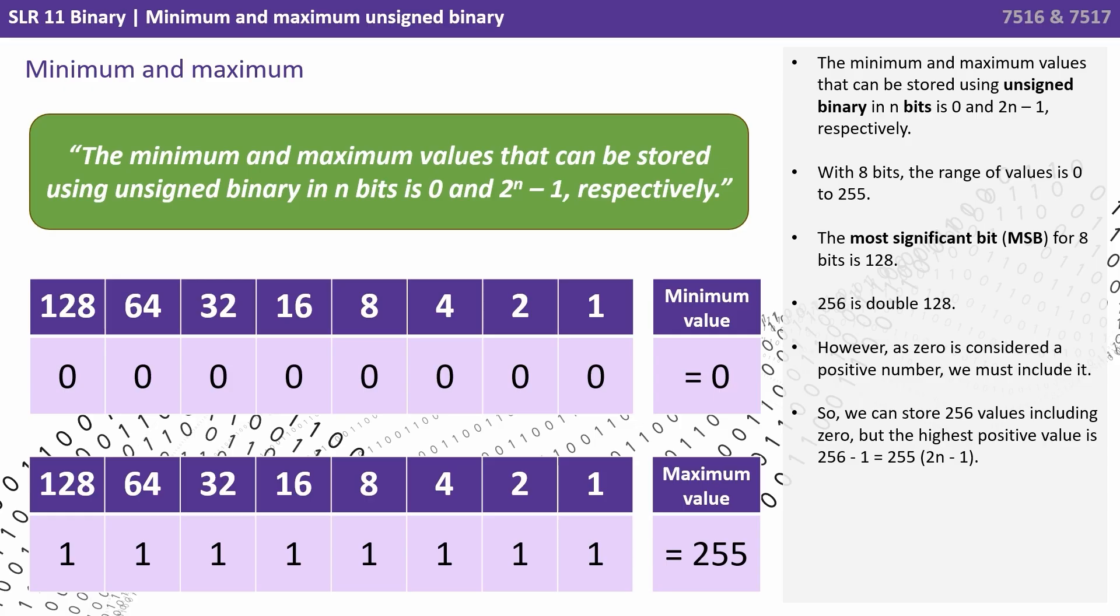256 is double 128. However, as 0 is considered a positive number, we must include it. So we can store 256 values, including 0, but the highest positive value is 256 minus 1. That's 255, or 2^n minus 1.